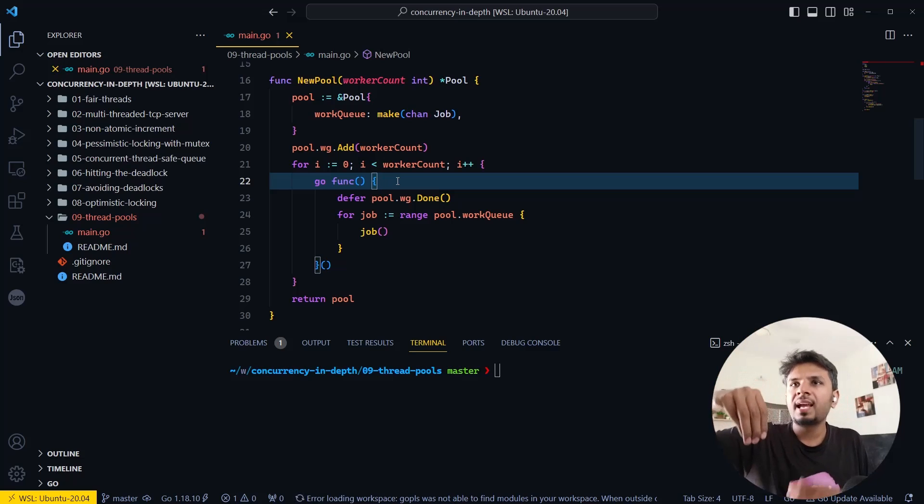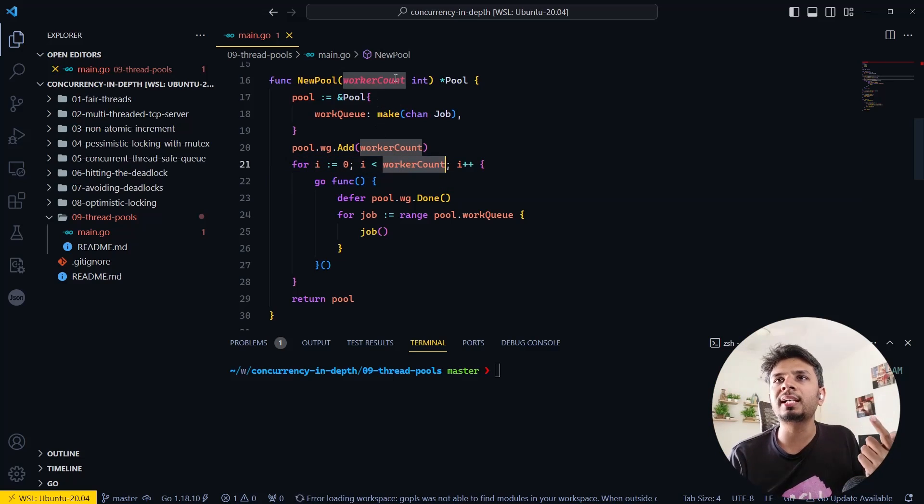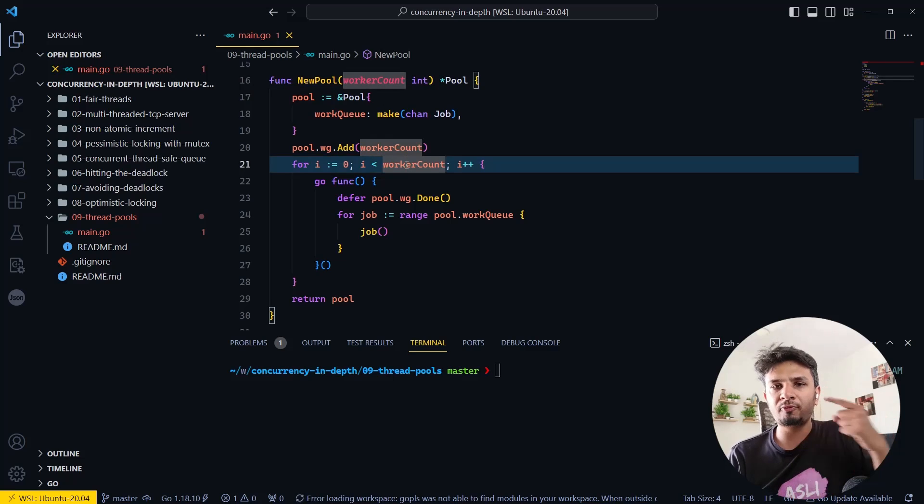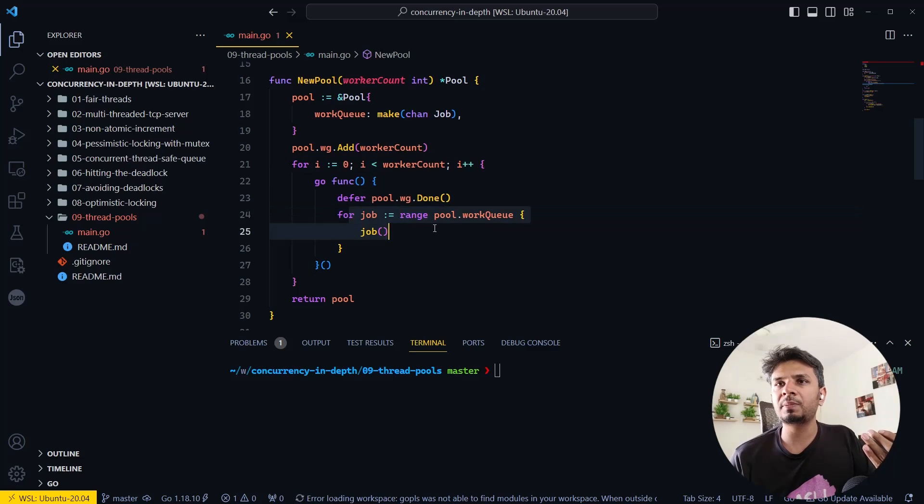Whenever I'm getting a task, the task is being added to the channel. My pool size was five, so I'm spinning up five goroutines which are continuously listening on this channel. Whenever we have a task in this channel, one of them is picking it up and executing it.